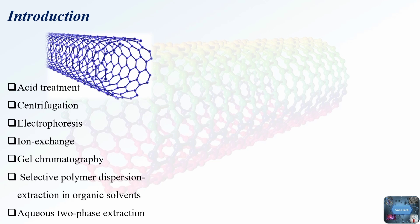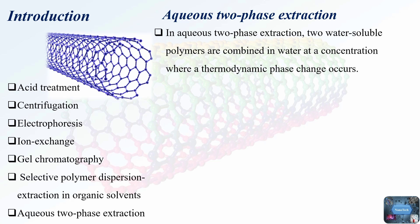Aqueous two-phase extraction was first introduced by Albertson in the 1950s. Initially, it was used to separate cellular components and biomolecules. In the process of aqueous two-phase extraction, two water-soluble polymers are combined in water at a concentration where a thermodynamic phase change occurs — for example, polyethylene glycol and dextran. This transition transforms a uniform solution into two distinct phases.